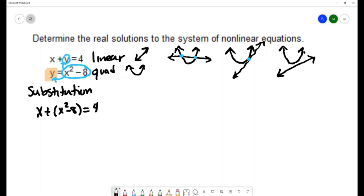This gives me a quadratic equation. Let me rearrange the terms: that's x squared plus x minus 8 equals 4. I'll move all those terms to the same side.